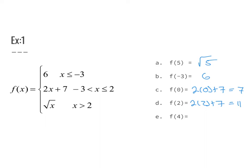For f(4): looking at the index, 4 is greater than 2, so I use the third function. We get the square root of 4, which simplifies to 2.